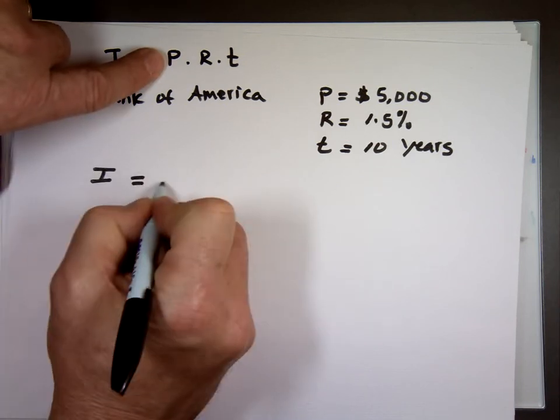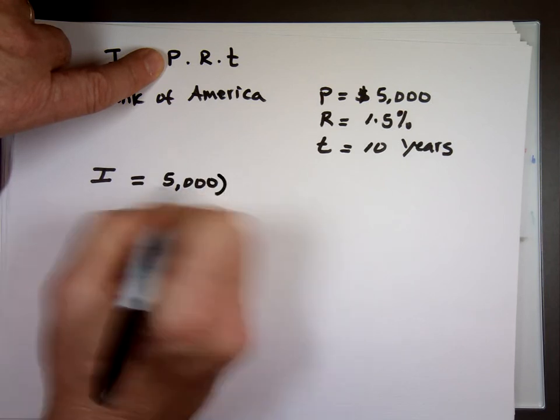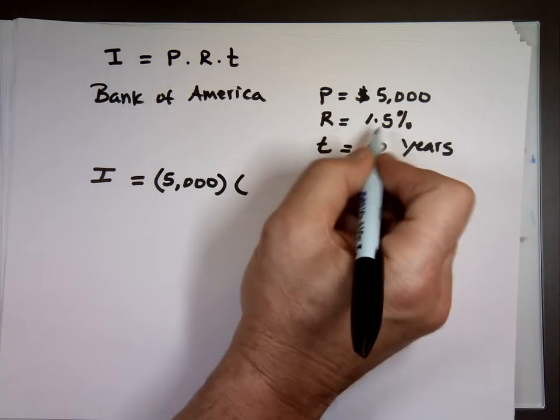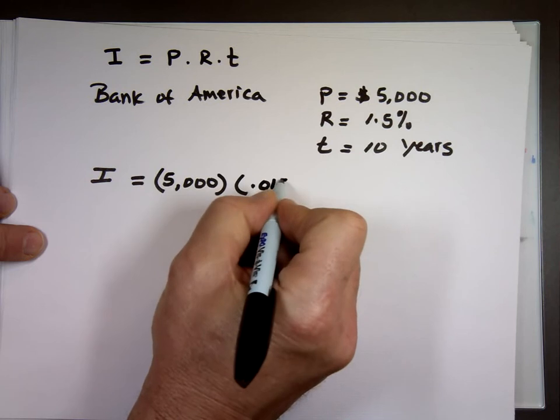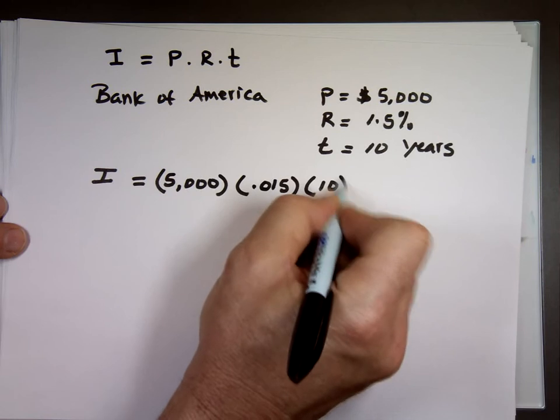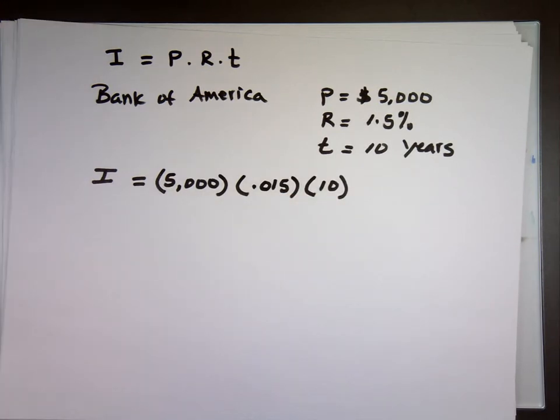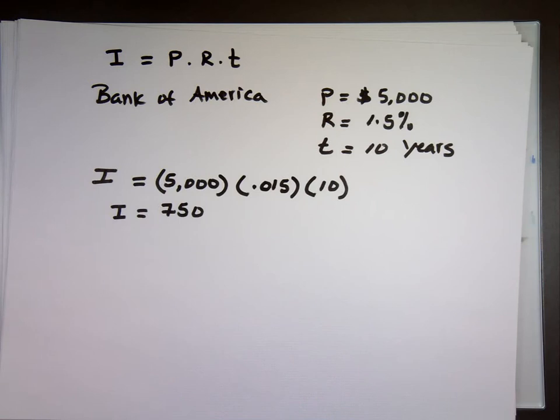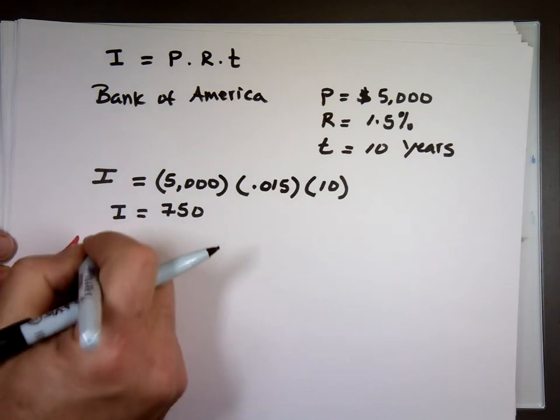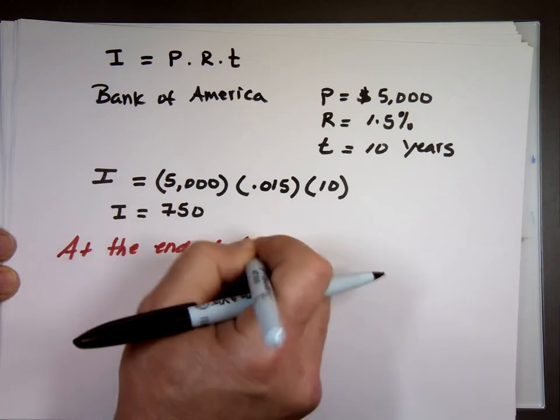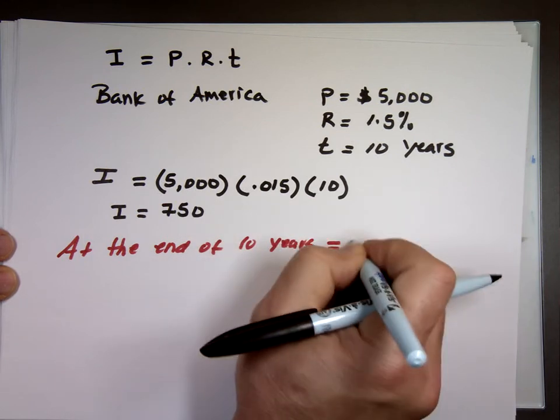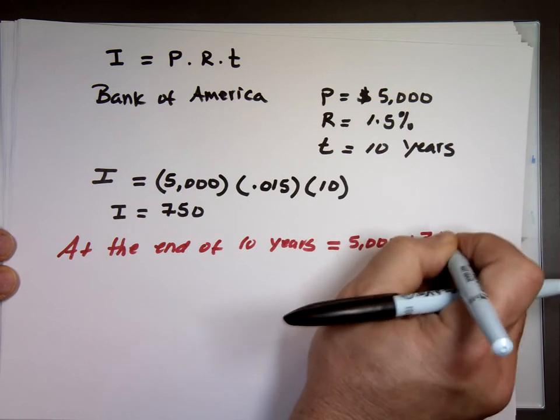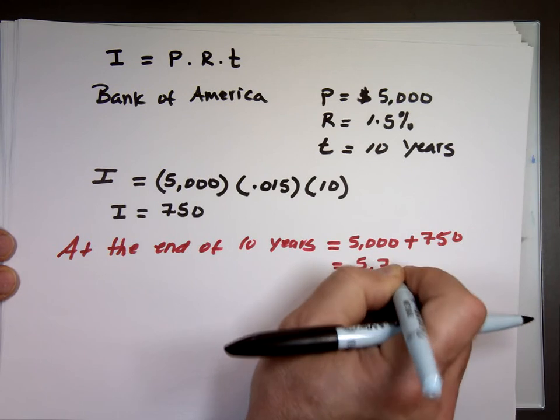So how much interest? Interest equals principle, which is 5,000, times the interest rate. I've got to change percent to a decimal. From pre-algebra, you move the decimal 0.2 places to the left, 0.015, times the number of years, which is 10. So 5,000 times 0.015 times 10, you're going to make $750 worth of interest. So at the end of 10 years, when you go to the bank to get your money, what the bank should give you is your $5,000 back, plus the interest, which is $750. You should get back $5,750.